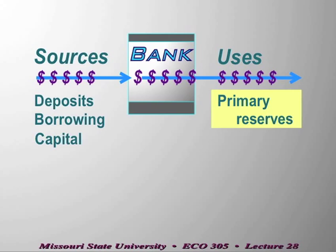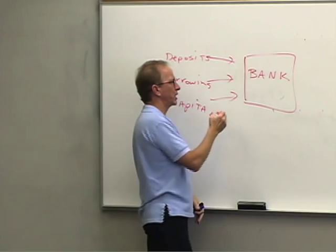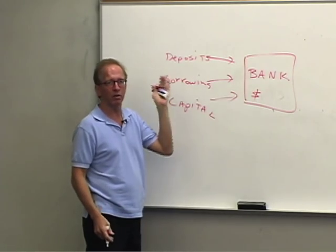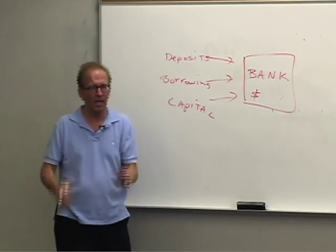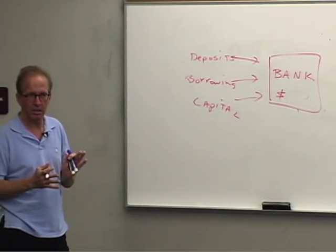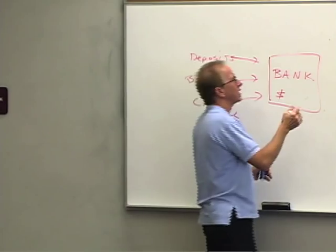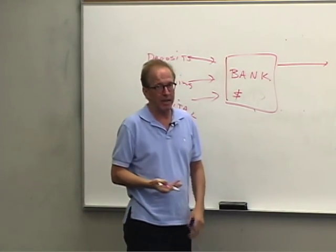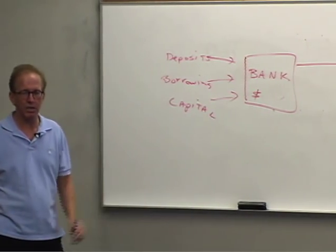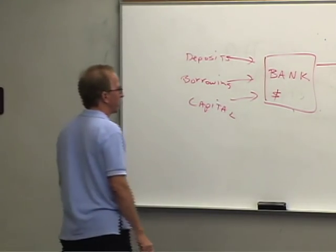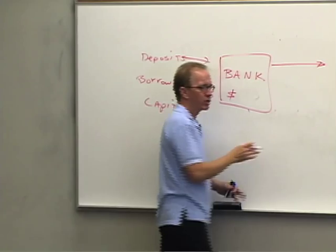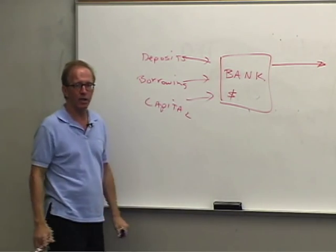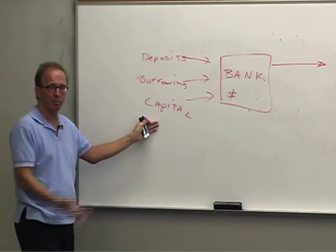The dollars coming in from these various sources — when a depositor makes a deposit, a lender loans money to the bank, or an owner hands money over — at that moment the bank has cash. Those dollars are assets. The bank could just hold onto that cash, but if it does nothing else with it, it won't be able to pay interest to depositors, interest to lenders, or turn profits back to owners.